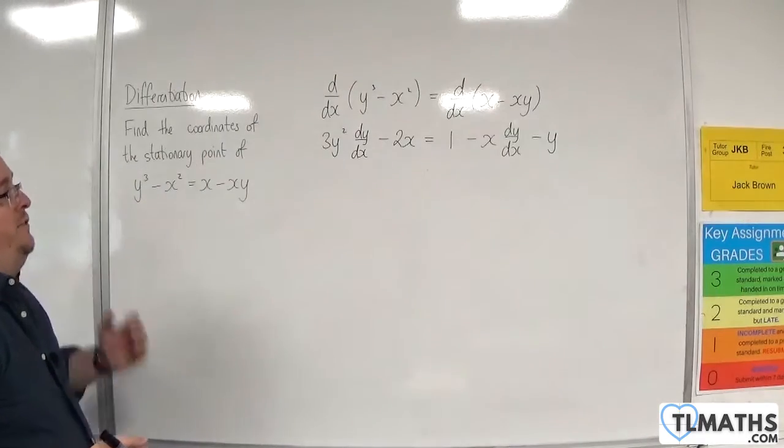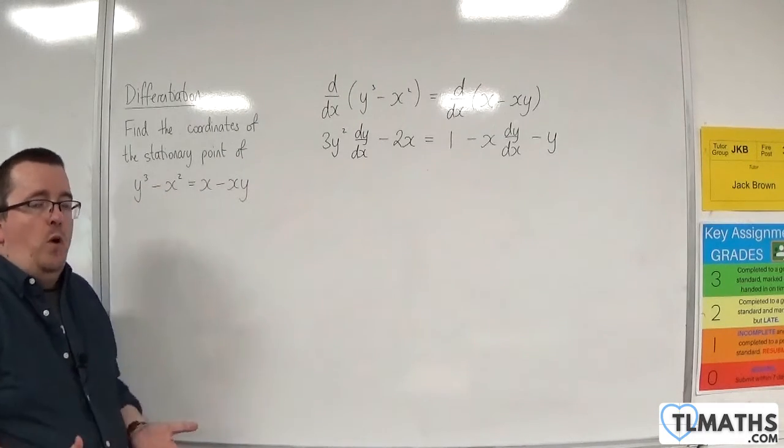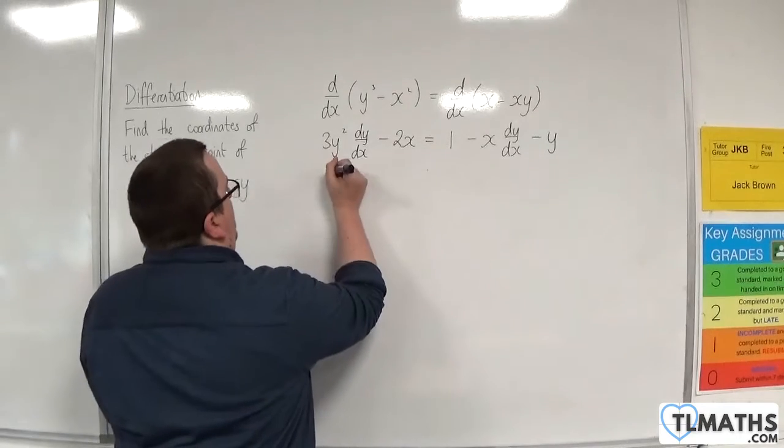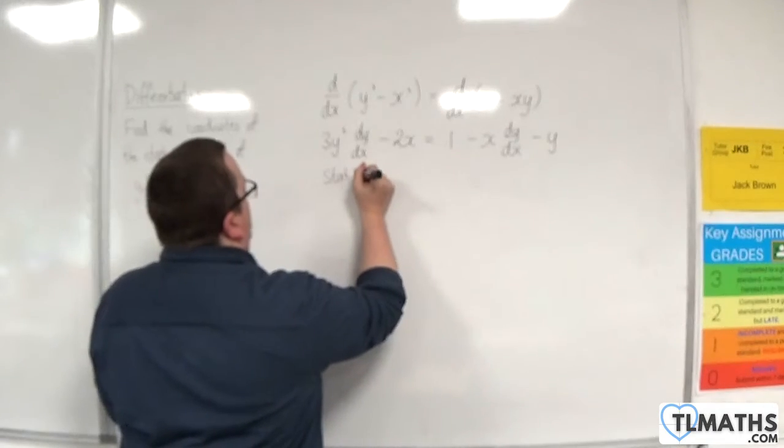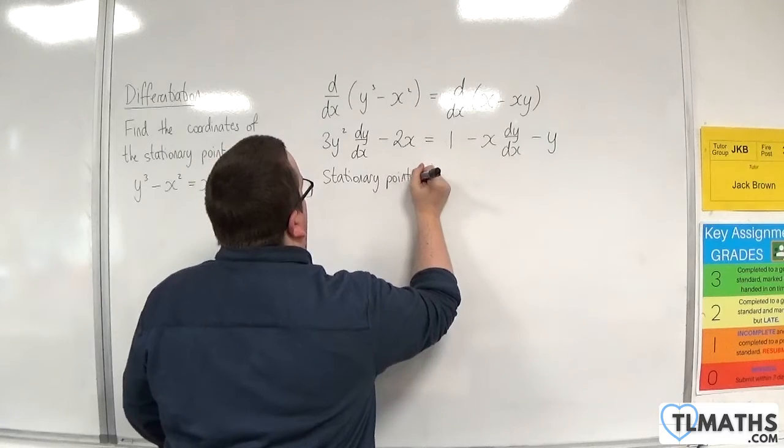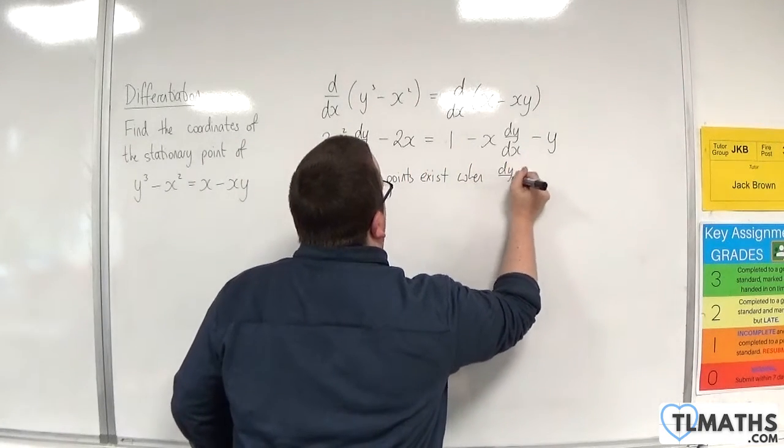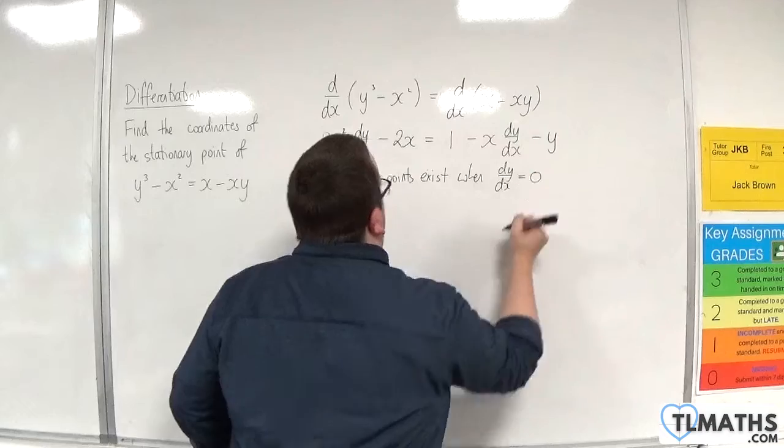Now when you're trying to find stationary points, you know that dy/dx has to be equal to 0. So I'm going to put that down. Stationary points exist when dy/dx is 0.